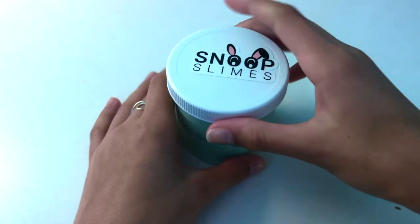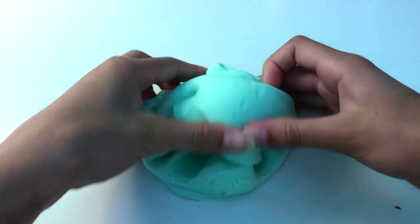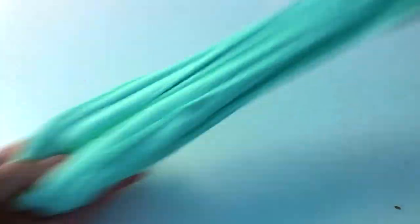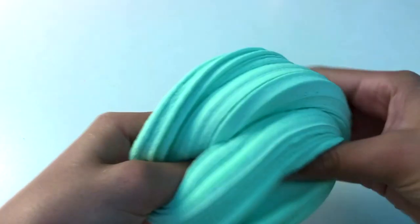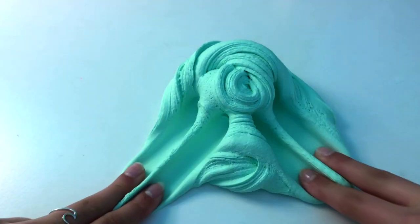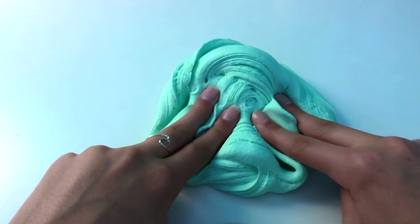Last but certainly not least is Eucalyptus Spearmint by Snoop Slimes. I know Jay is known for all of her clear slimes because they are amazing. But I am also obsessed with her butter slime. I think I've had this one for a little over a year. And it's still super thick, creamy, and stretchy.